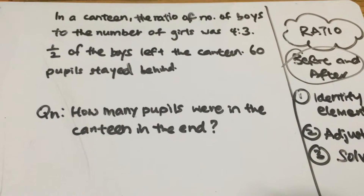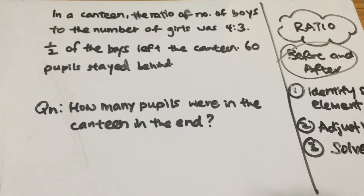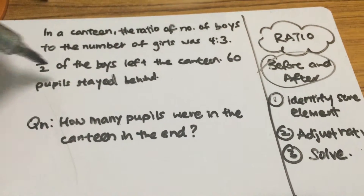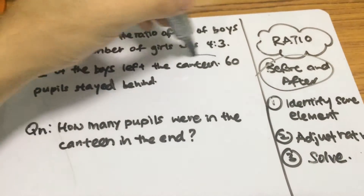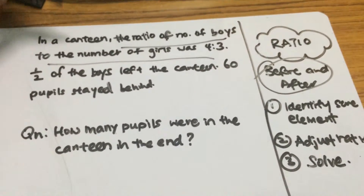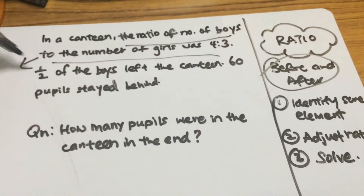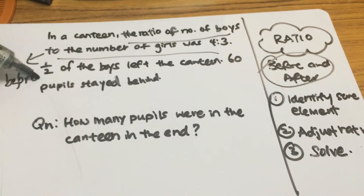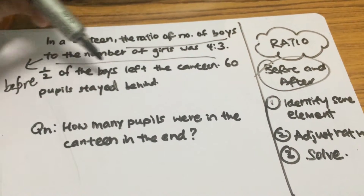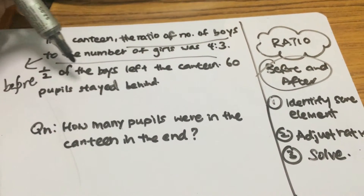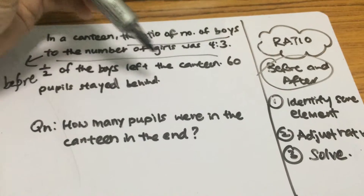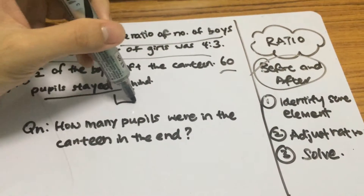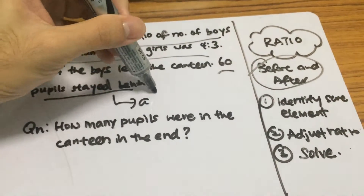In the canteen, the ratio of the number of boys to the number of girls was four is to three. This is the ratio before. During the process, half of the boys left the canteen and 60 pupils stayed behind — so this is the after scenario.